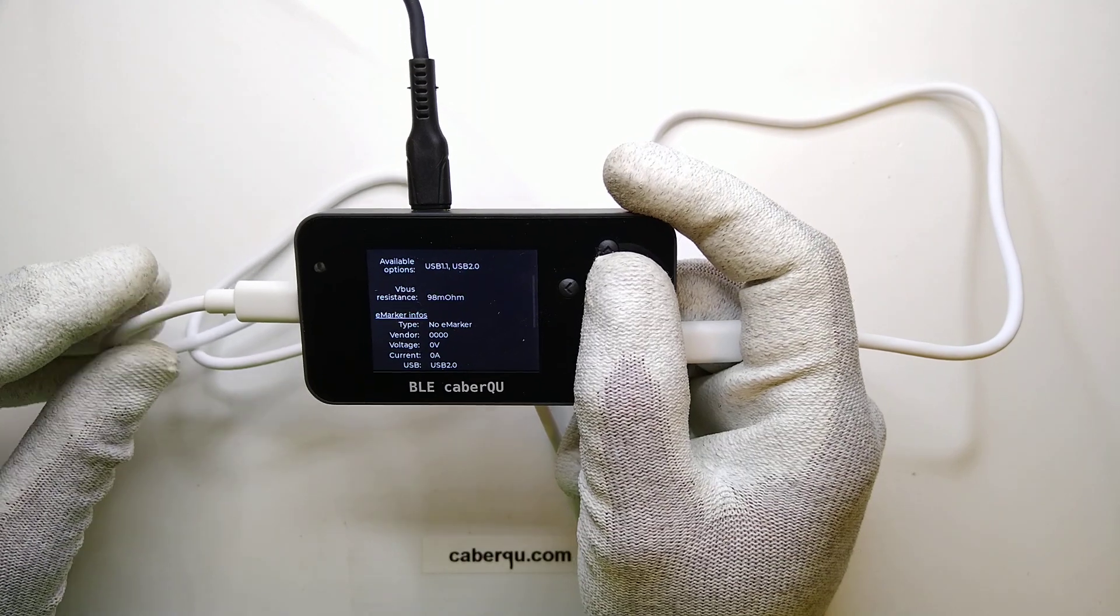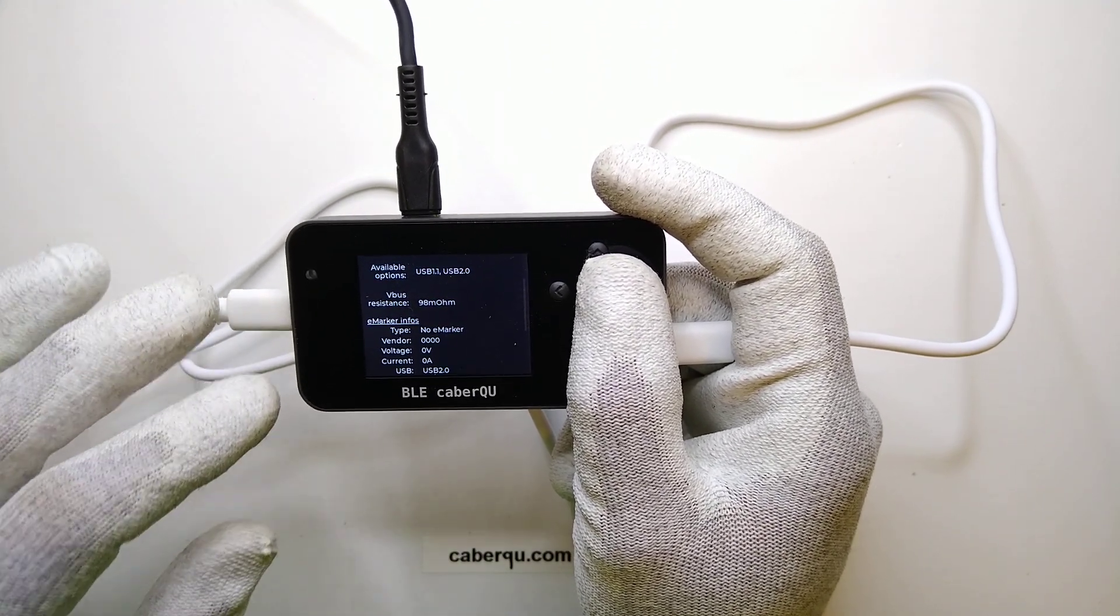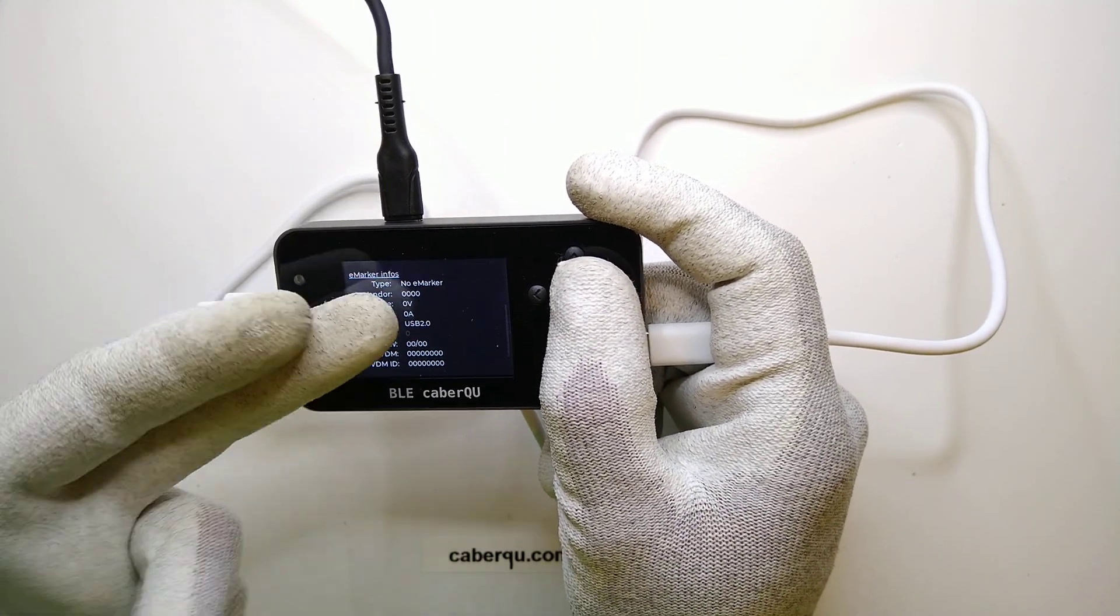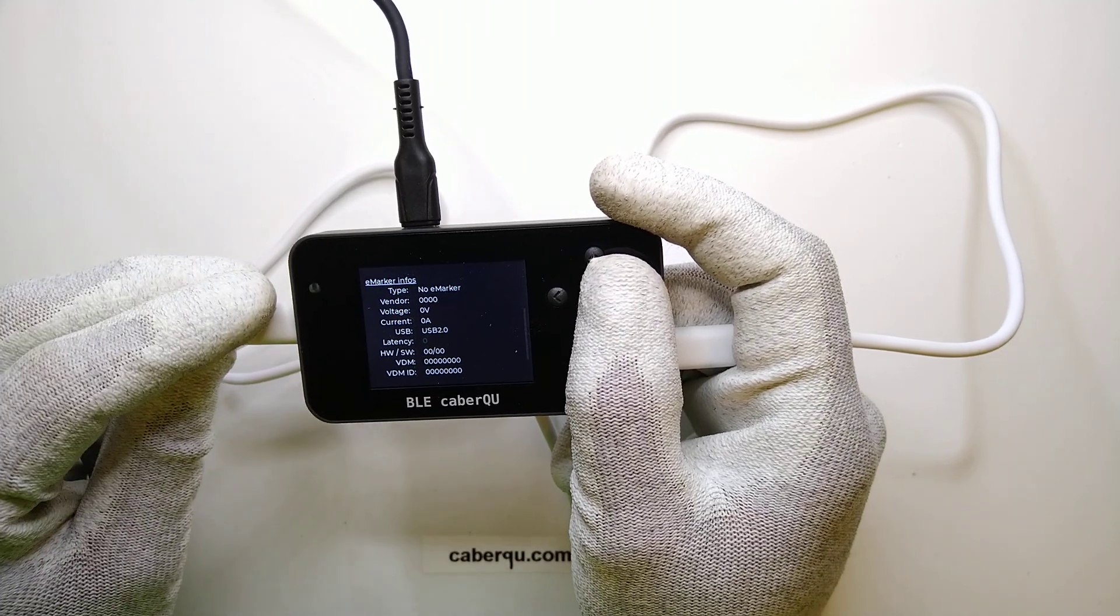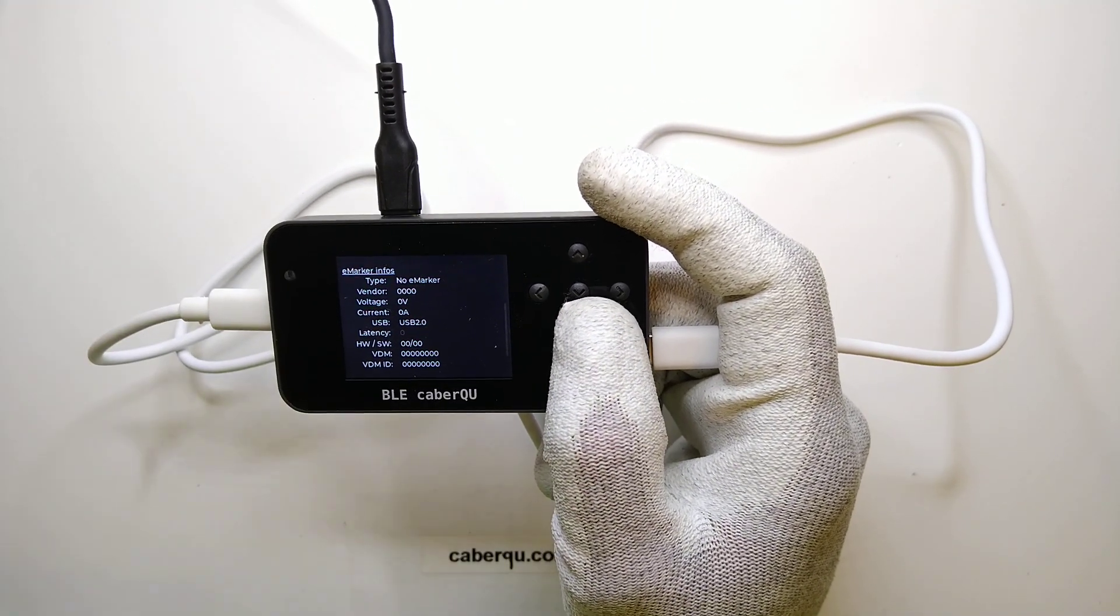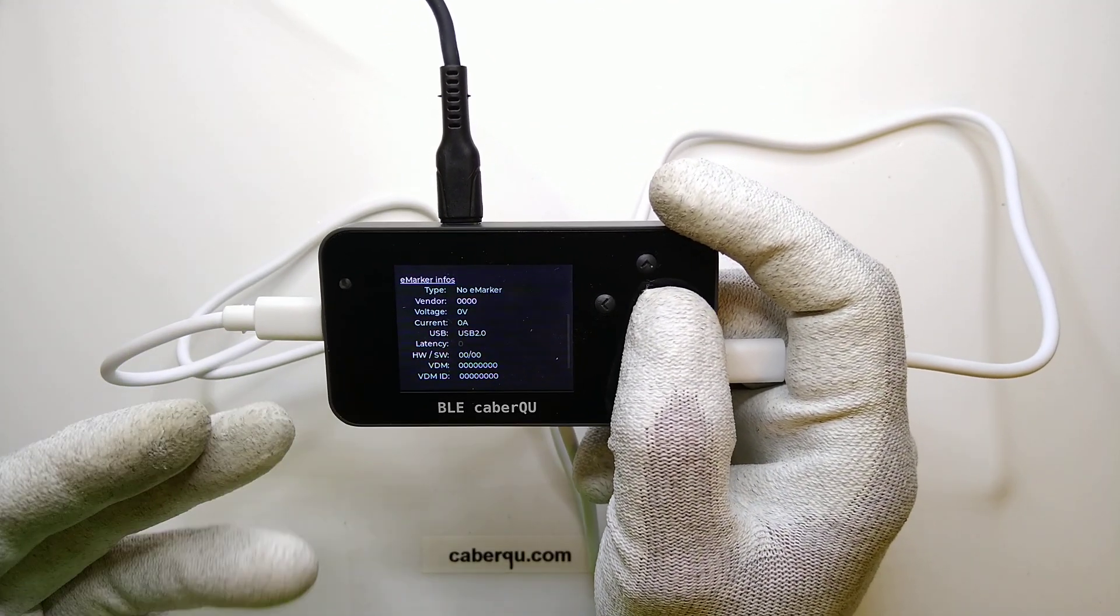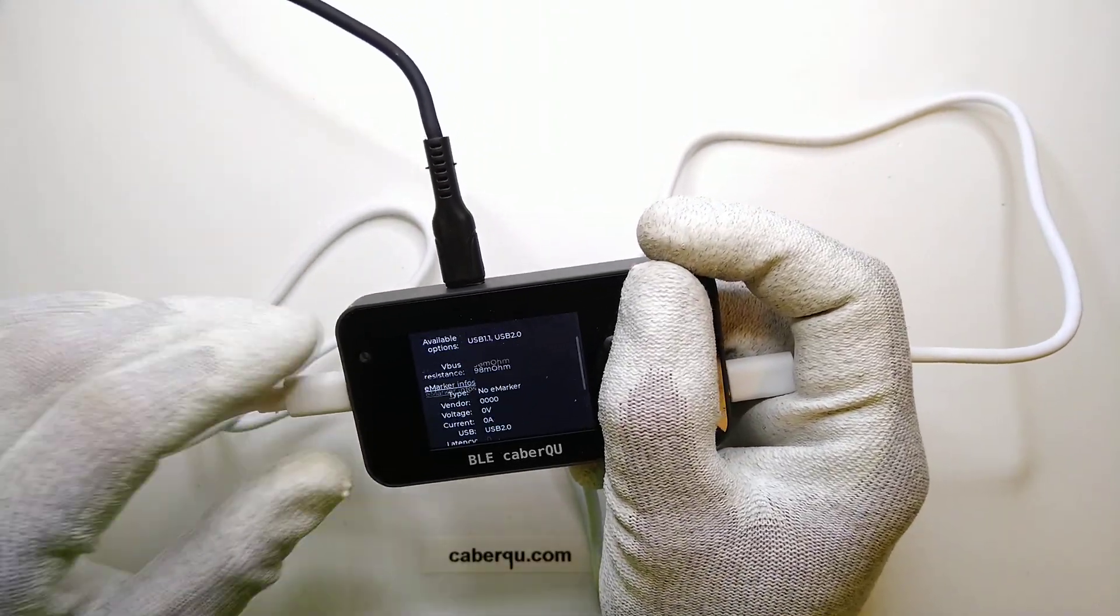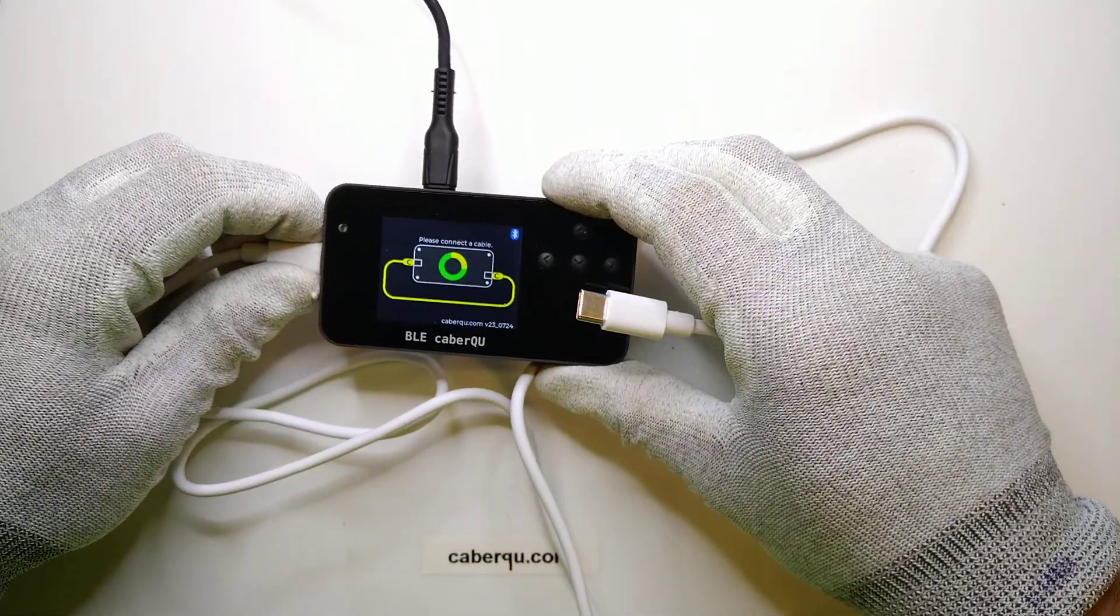Like I said, there's no e-marker inside so there cannot be any kind of USB power delivery negotiations. It cannot talk to the cable itself—the cable is just a passive thing where you have copper from one end to the other and then the device is going to start to draw current.